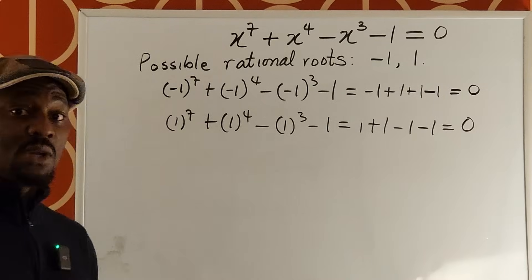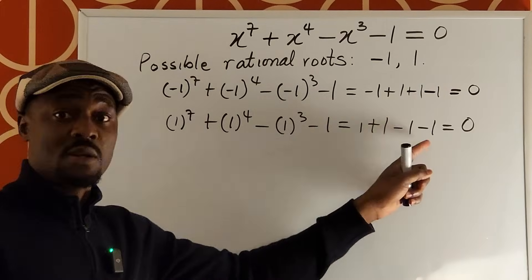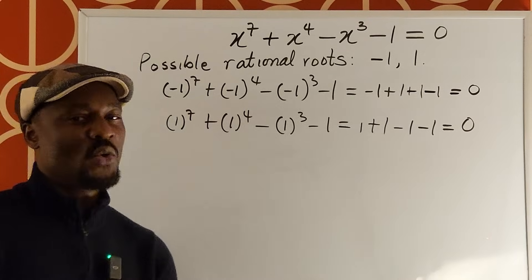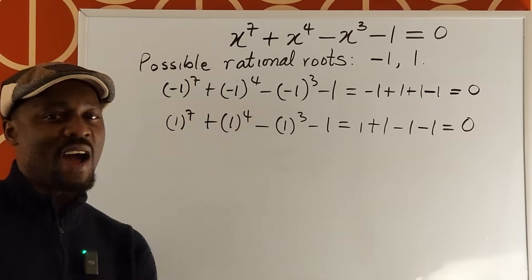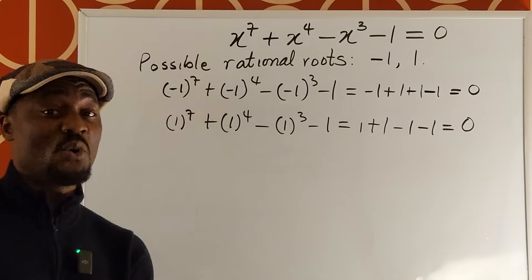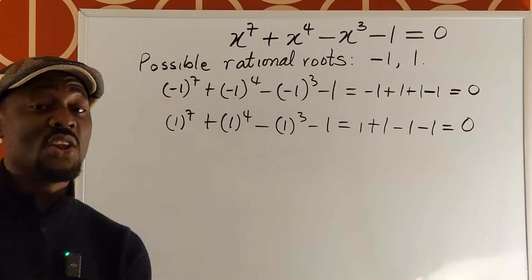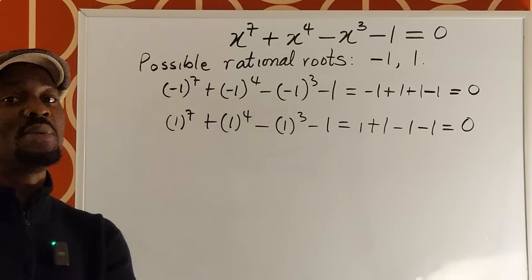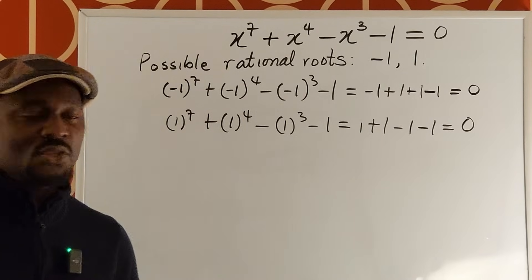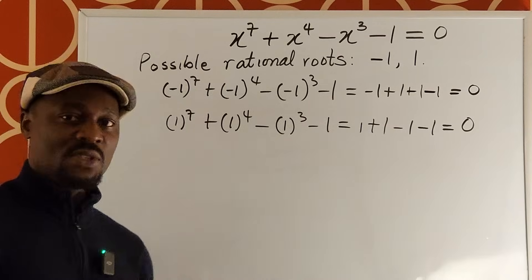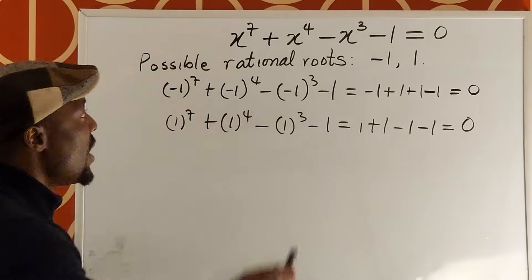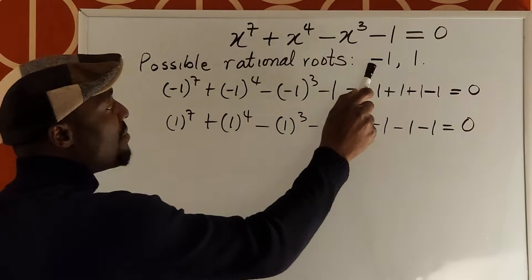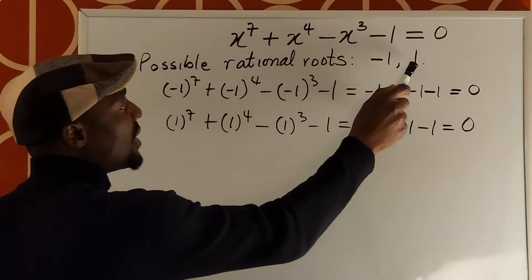If one or negative one occurs more than once, then fewer than five of the remaining solutions are non-integers — maybe four, three, two, or none. So let's do synthetic division, dividing this polynomial using negative one and one. We'll start by dividing by one first.